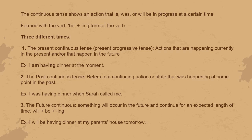The second is the past continuous tense, which refers to an action that was happening at some point in the past. For example, 'I was having dinner when Sarah called' — the action was taking place in the past, and then suddenly something happened that caused it to stop, in this case when Sarah called.